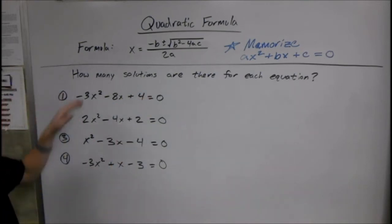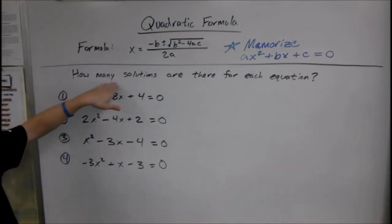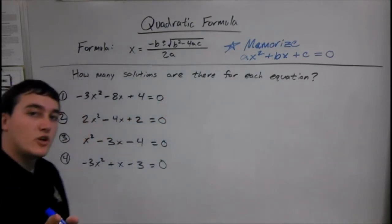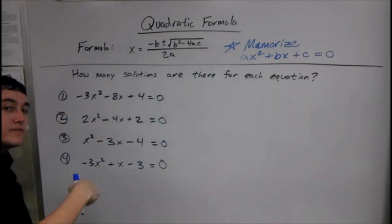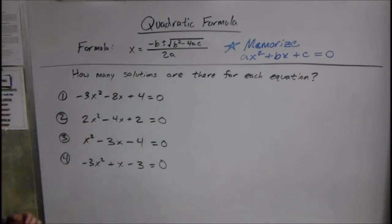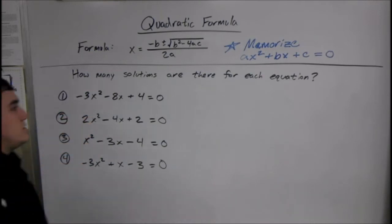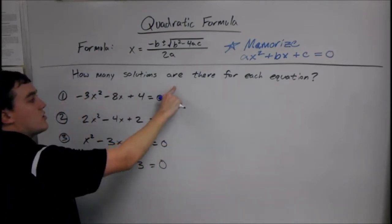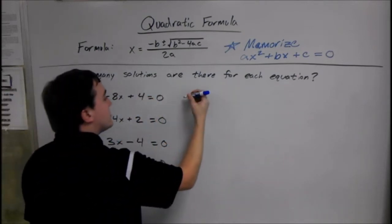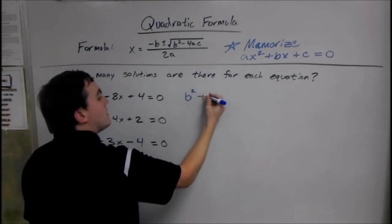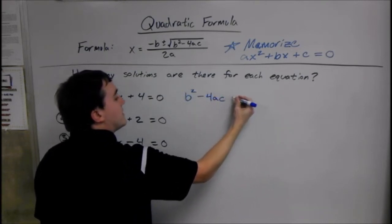The first thing we're going to do is figure out how many solutions there are for each equation. We're going to use the determinant from the definitions earlier to figure out how many solutions each equation gives us. When you're finding how many solutions there are, you're using the determinant. The determinant is just b squared minus 4ac.